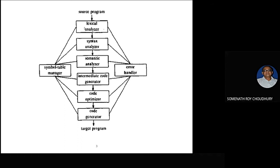The lexical analyzer only gives you the token — nothing more. If there is any error in naming a variable, a flag will be set and you get a lexical error. The type of variable, the scope of the variable, and all these details are filled in by the syntax analyzer. The syntax analyzer — which we call the parser — is 30 to 40 percent of the main topic of this course.